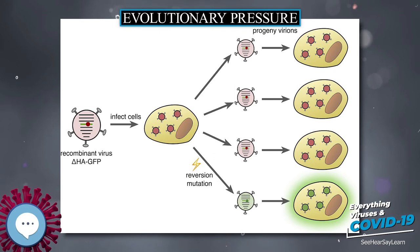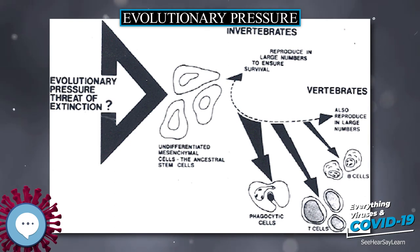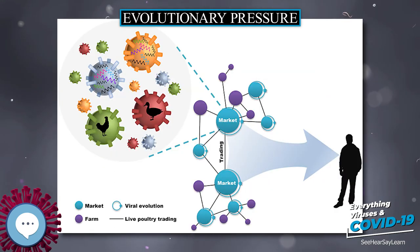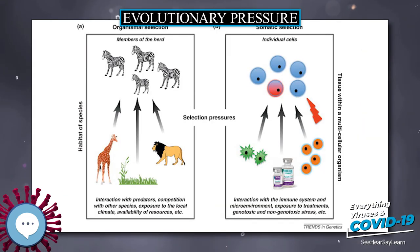Resistance to Herbicides and Pesticides: Just as with the development of antibiotic resistance in bacteria, resistance to pesticides and herbicides has begun to appear with commonly used agricultural chemicals. Human activity can also lead to unintended changes in the environment.